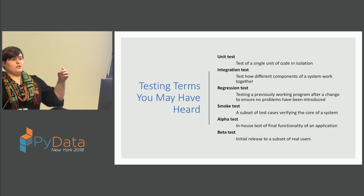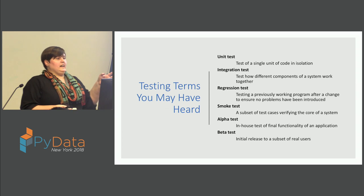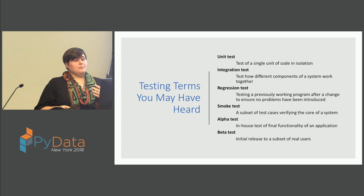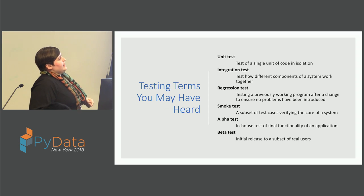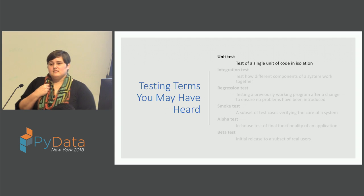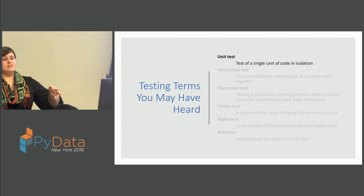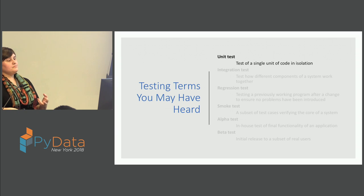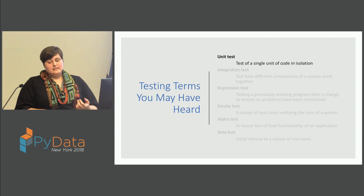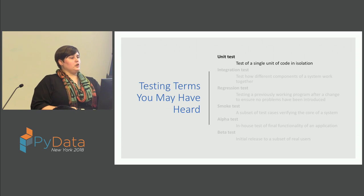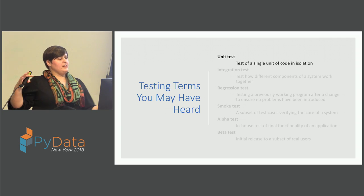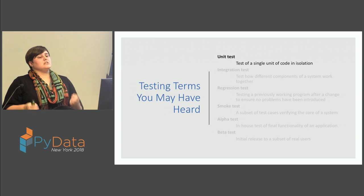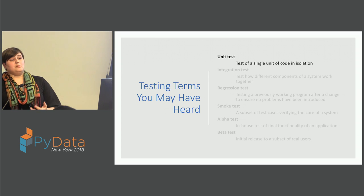Testing has a whole bunch of jargon that if you're not in software engineering you may not be super familiar with. Today we are just going to worry about unit testing — we're going to put all other types of testing to the side. Unit testing is testing a single piece of code in an isolated context. We're not going to worry about how everything plays together, but we're going to make sure that each piece is doing what we want it to do.